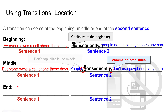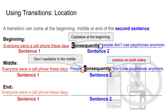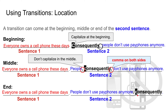We can also put the transition at the end of a sentence. Don't capitalize the transition if it doesn't start the sentence. For example: 'Everyone owns a cell phone these days. People don't use pay phones anymore, consequently.' Put the comma before the transition, and don't capitalize.